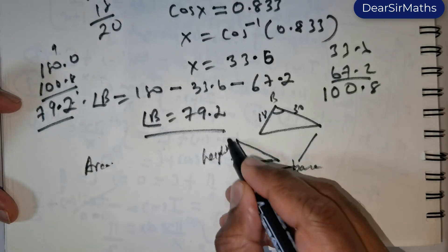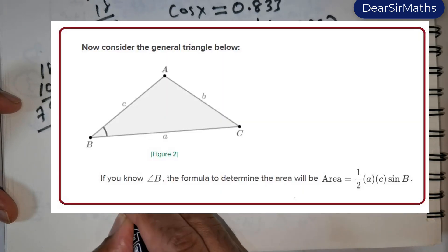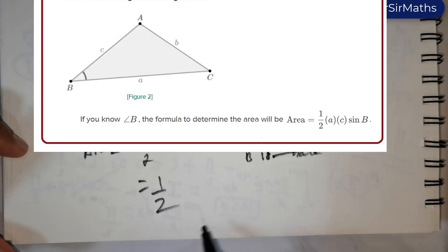Area of triangle ABC, right, is given by half into—so all you need to do is just simply substitute the value.